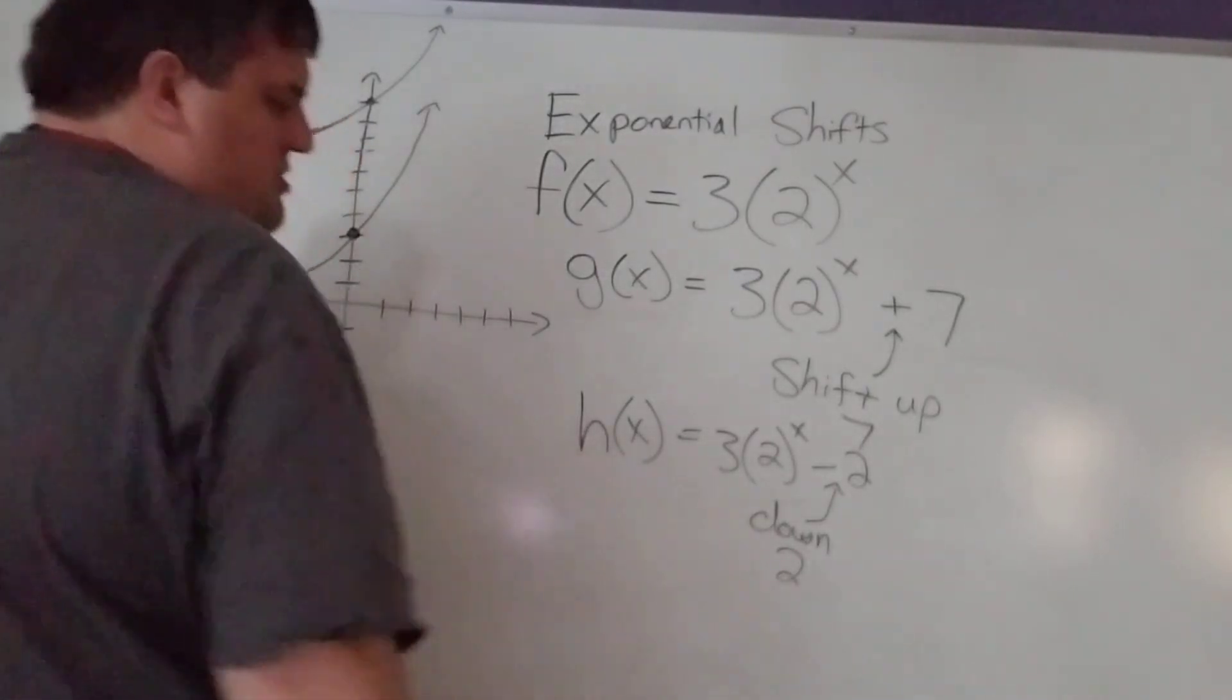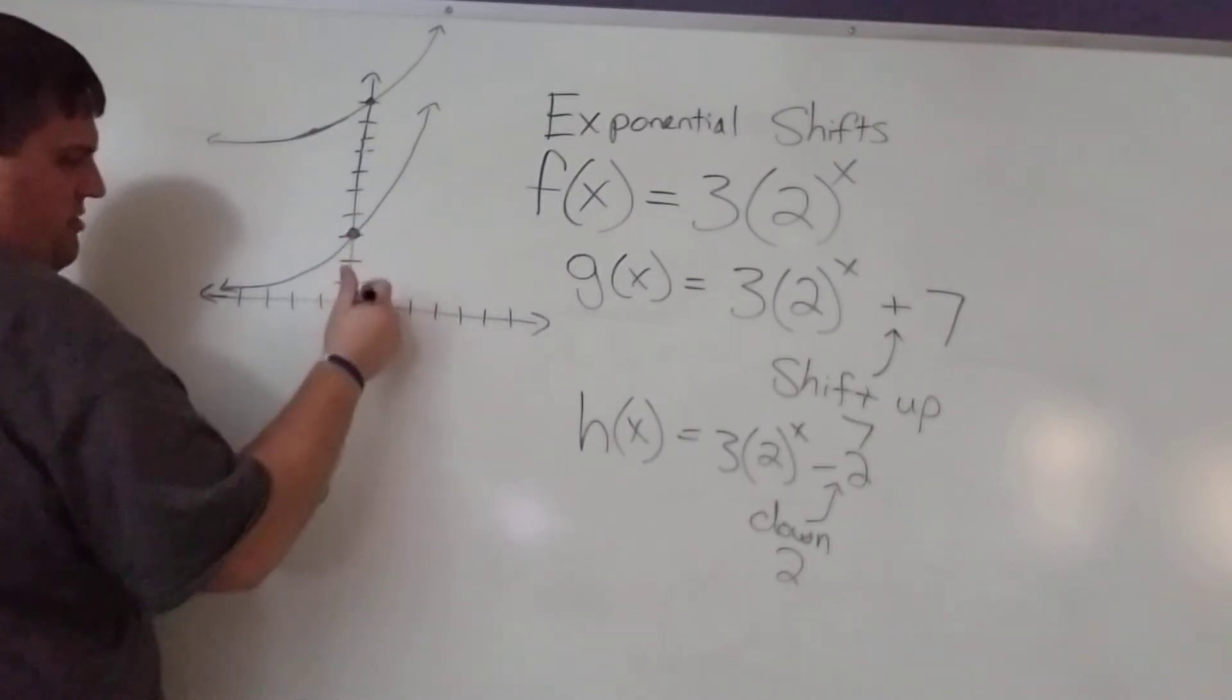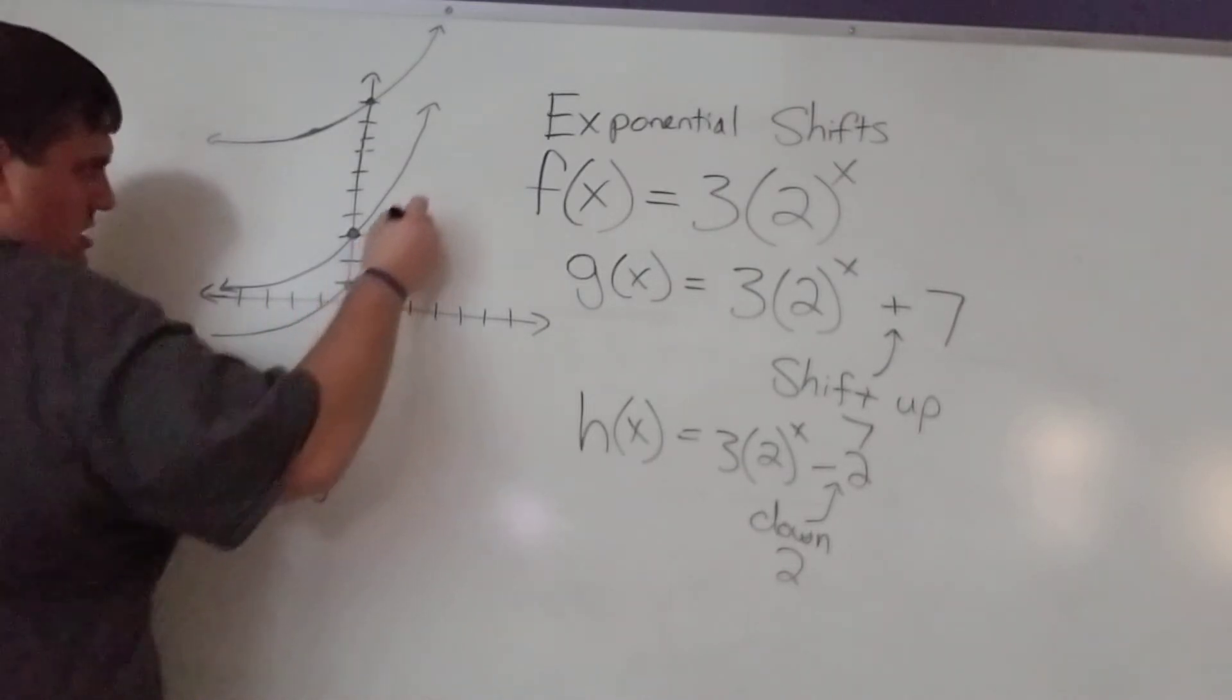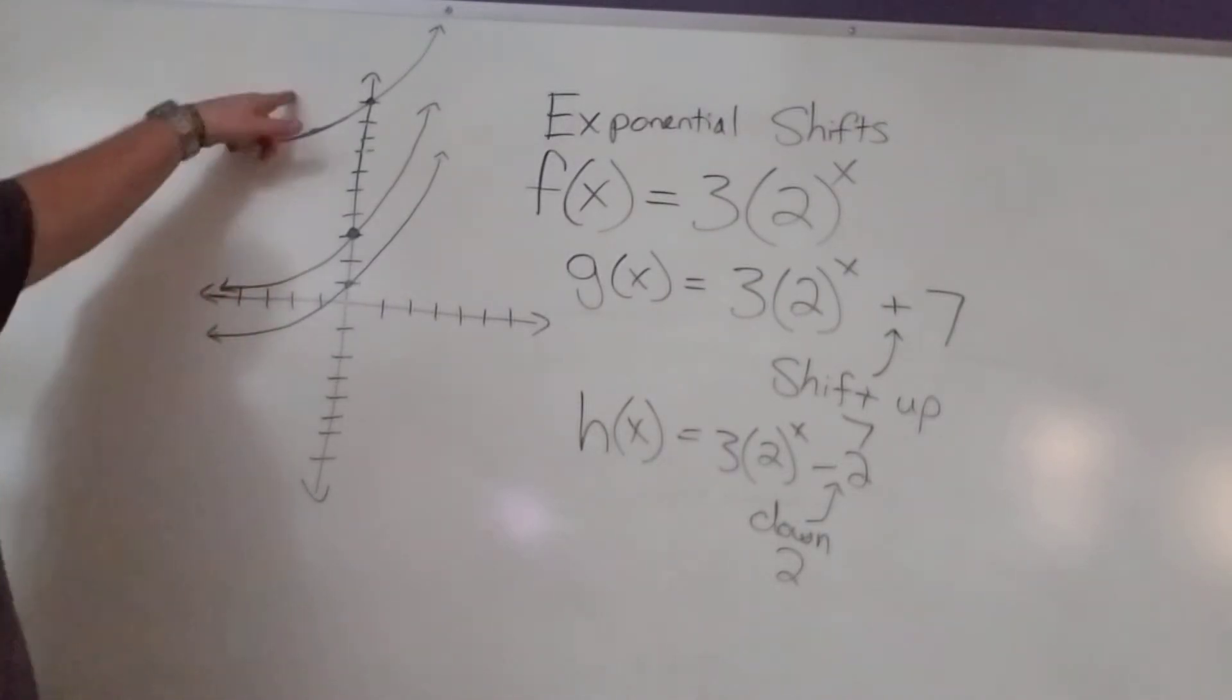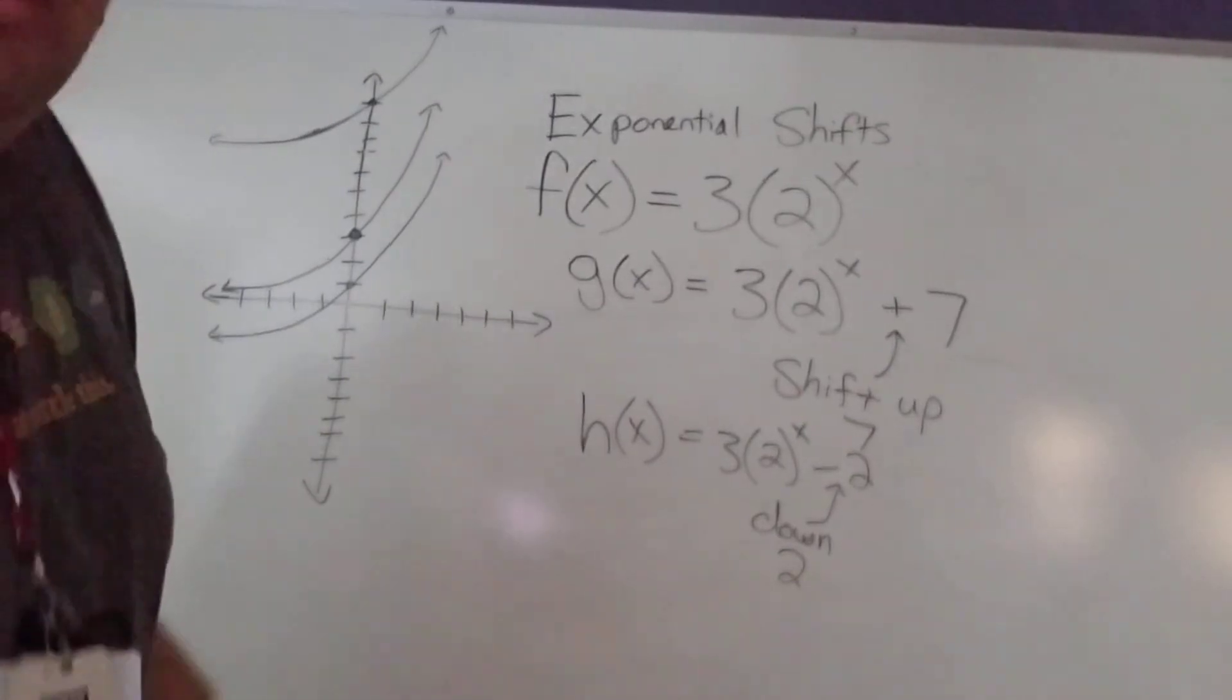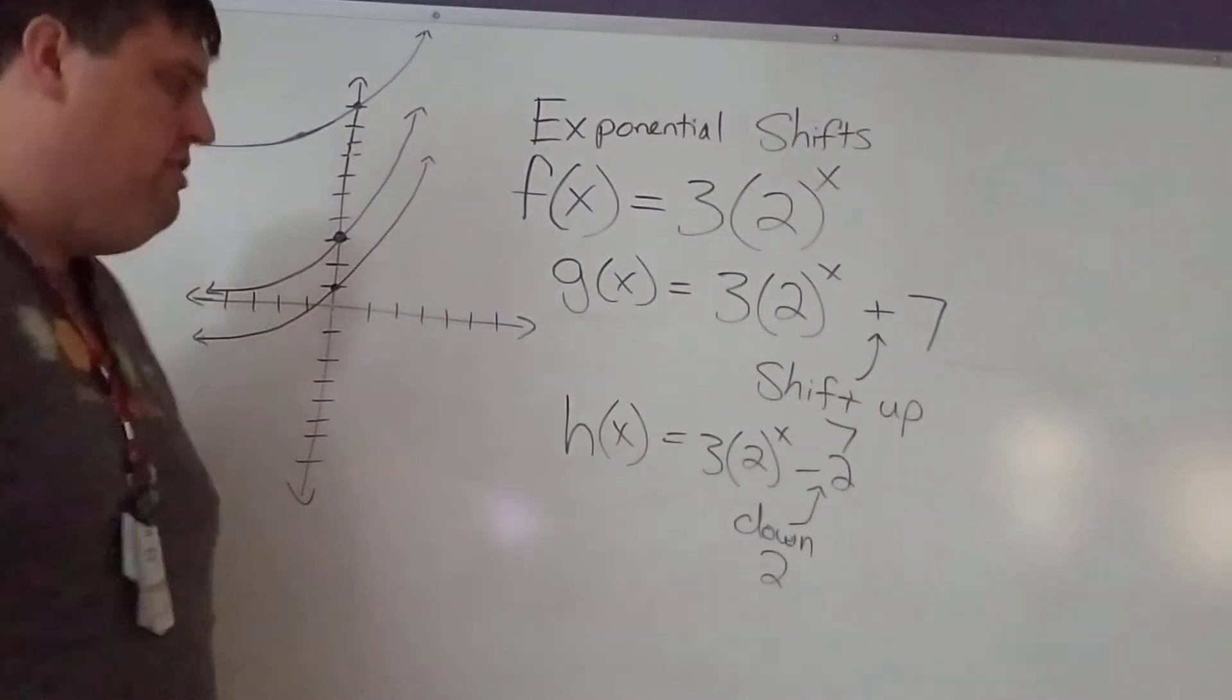Same thing down here. If we graph this one, shift it down 2, I'm just going to take this point, go down 1, 2. It's going to cross there. That means my asymptote would be down here at negative 2, and it's going to increase from there. That's enough to show me that you understand where it's shifting to if you have to graph it.